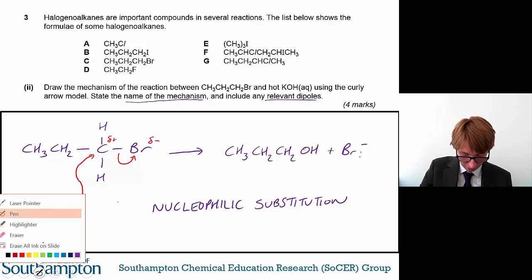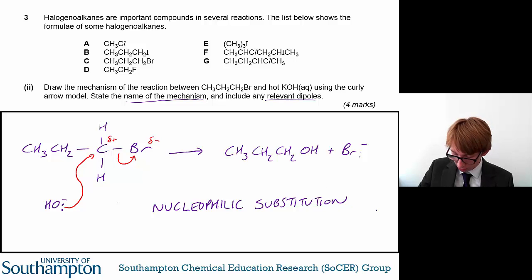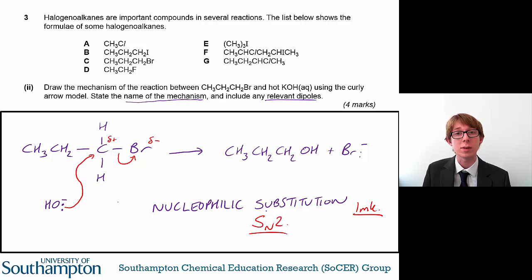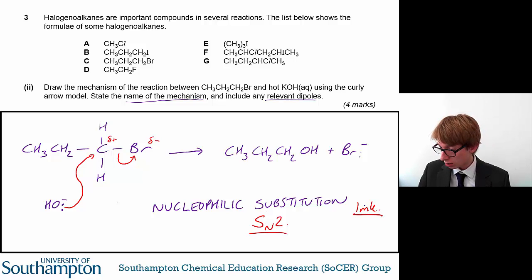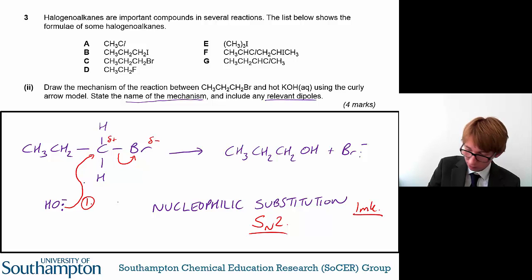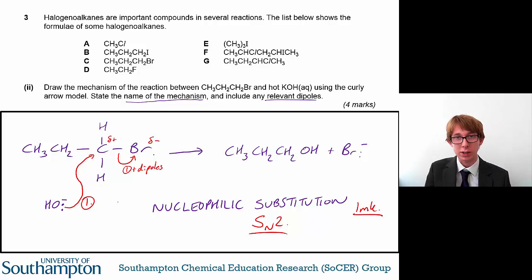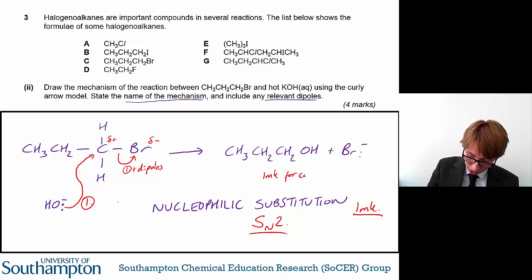You get one mark for the name of the mechanism. You may have also heard this called an SN2 reaction — you will also get a mark for saying it's an SN2 reaction, but as far as I'm aware this is only covered on the Edexcel exam board. You get one mark for this curly arrow here, one mark for this curly arrow here as well as the dipole — you need to have that curly arrow and the dipole correct to get that mark. And you also get a mark for correct product structure.